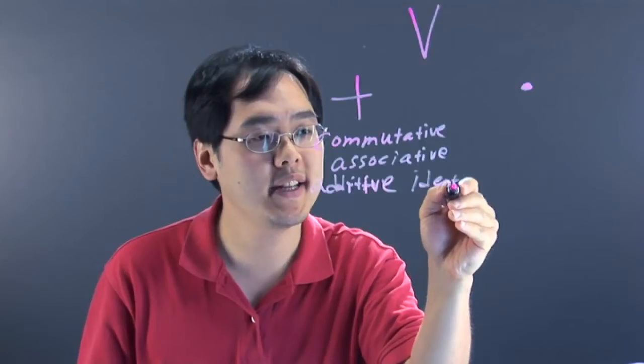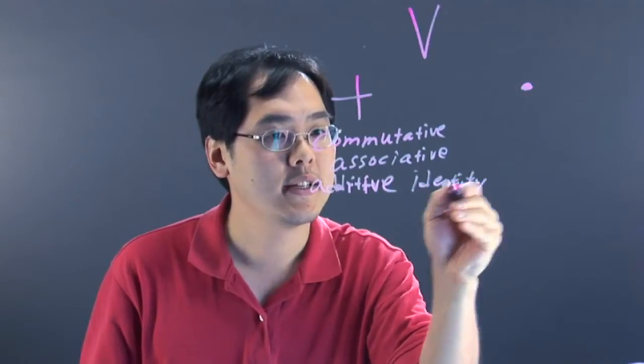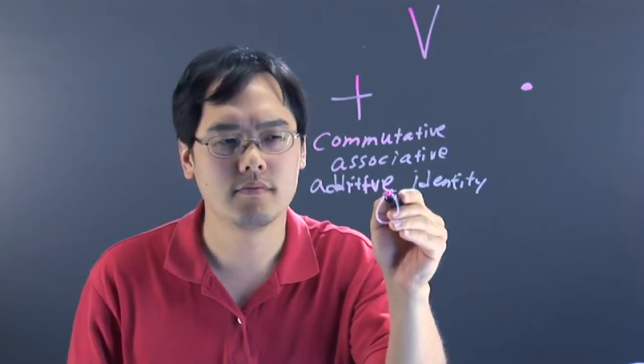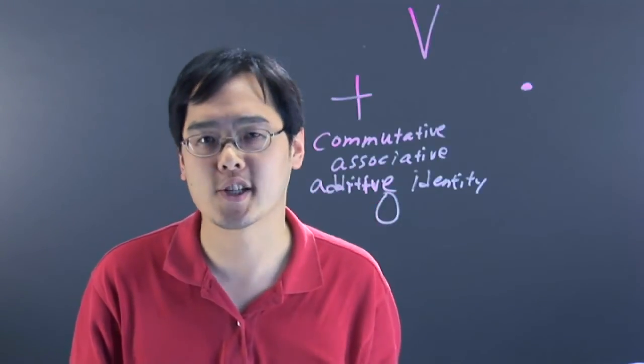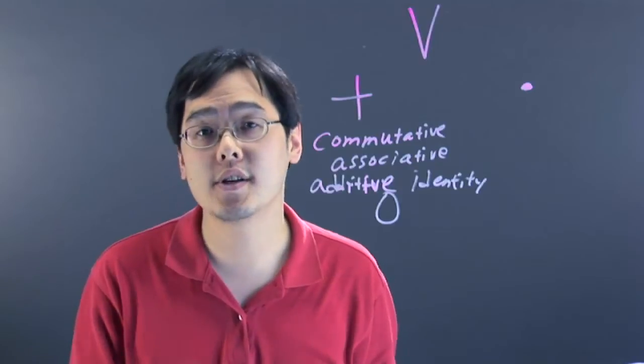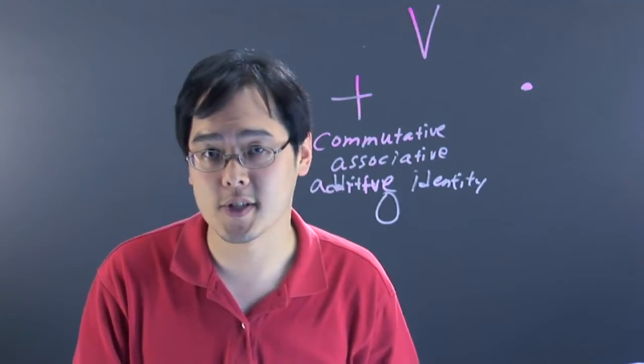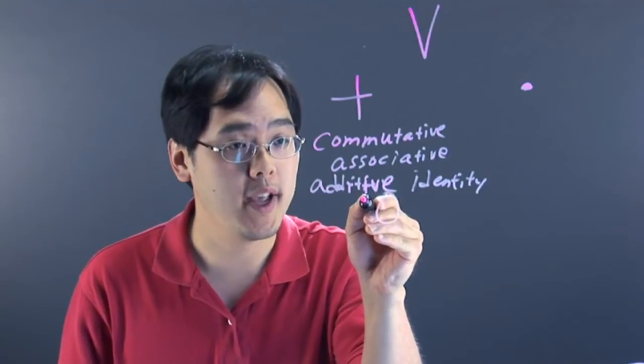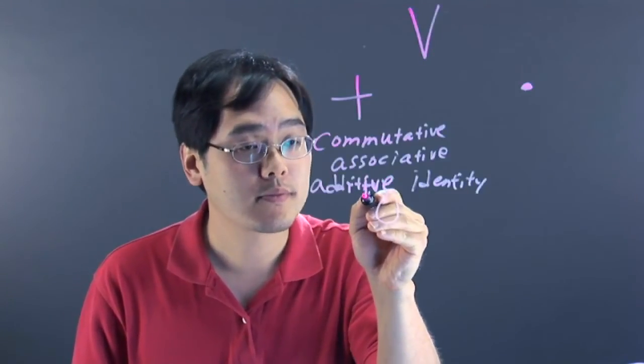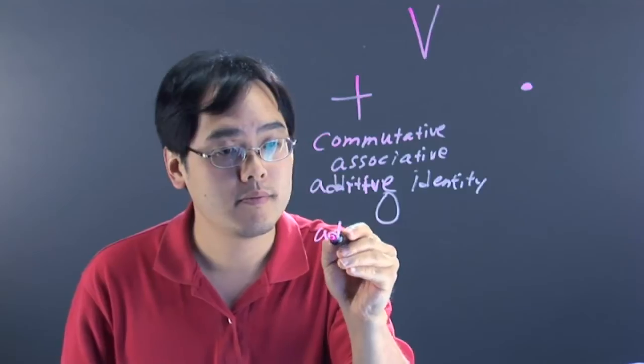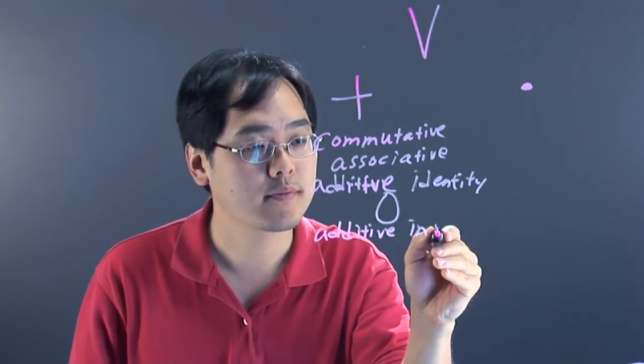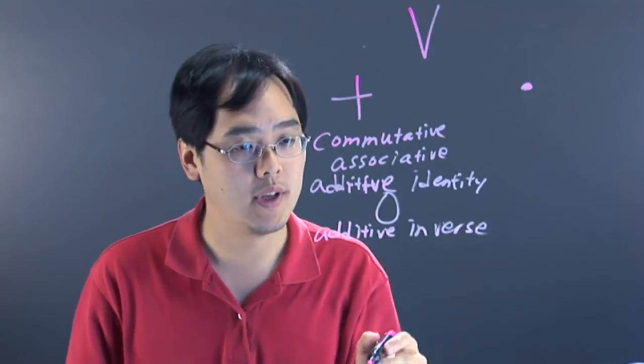An additive identity means there is a zero element. I know that sounds kind of weird, because it may sound like common sense that zero would belong, but believe it or not, zero does not belong in certain sets of vectors, depending on how it's defined. It also must have an additive inverse.